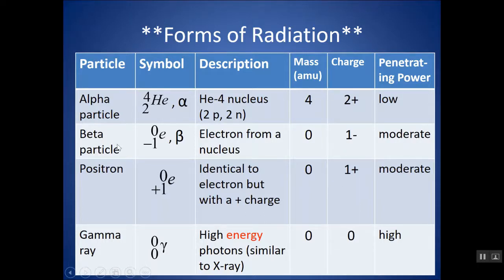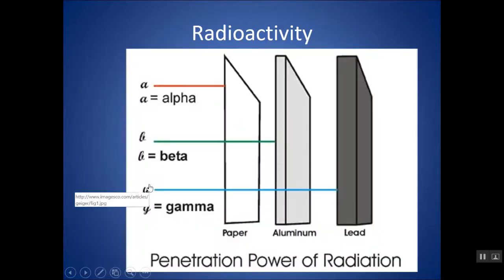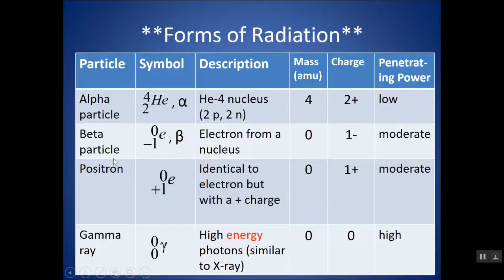A beta particle is like an electron, but it is emitted from the nucleus. The positron is similar to an electron — it has a mass of 0 but a plus-1 charge. A gamma ray has no mass and no charge — it's pure energy emitted from a nucleus, similar to an x-ray but with more energy.